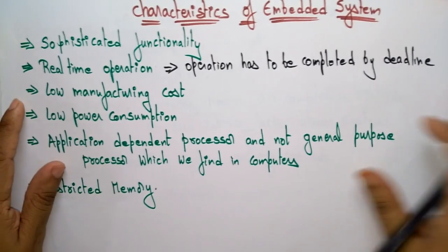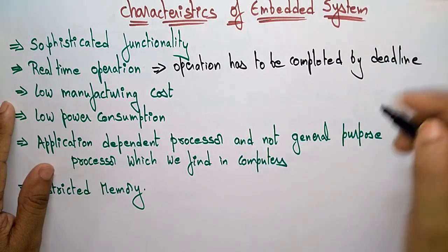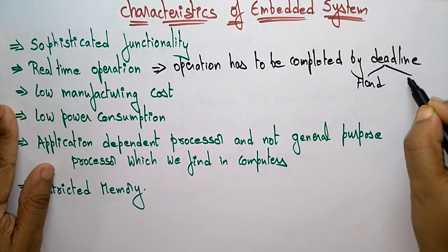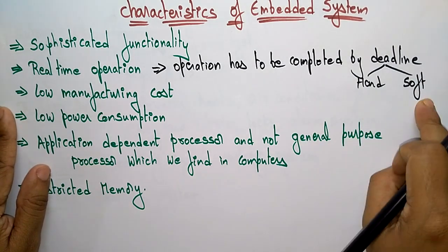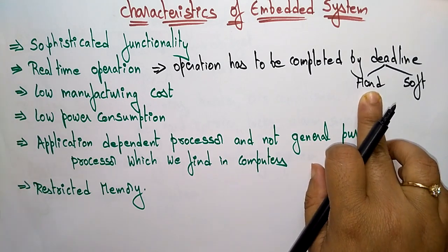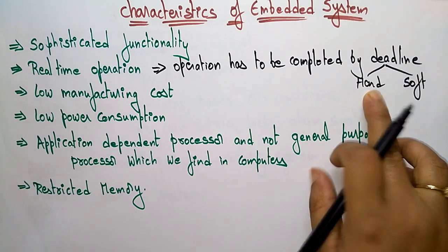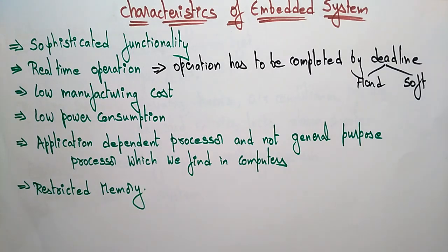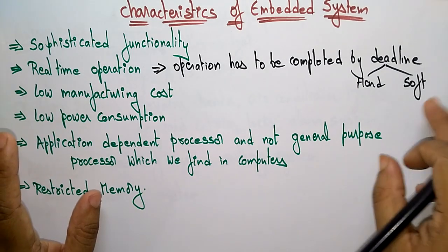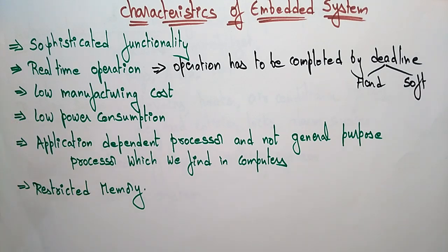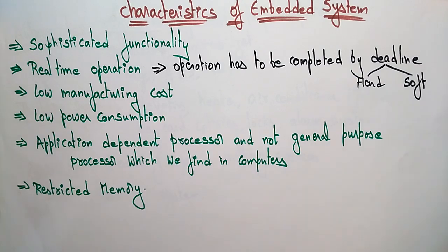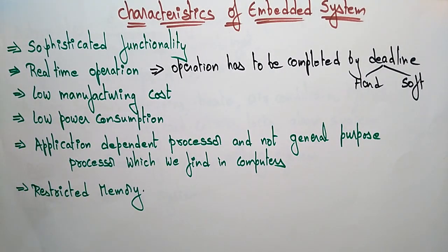There are two kinds of real-time deadlines: hard and soft. The hard deadline means we cannot miss the deadline — once the deadline is fixed, the task has to be completed at any cost. A soft deadline means we can miss the deadline; even if the task crosses the time limit, it still gets completed. In hard real-time, the work must be completed strictly within the deadline.